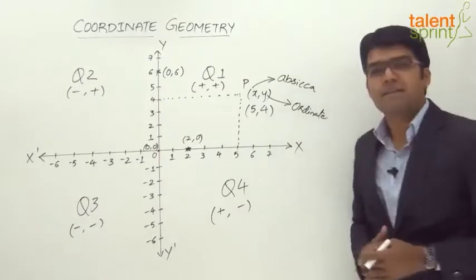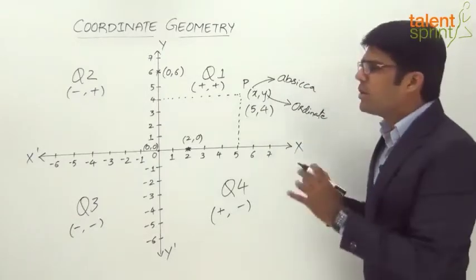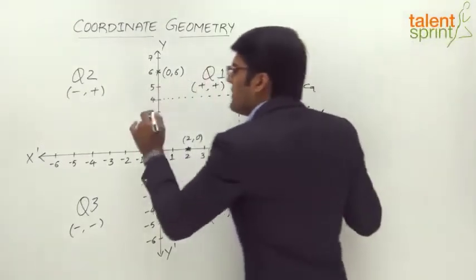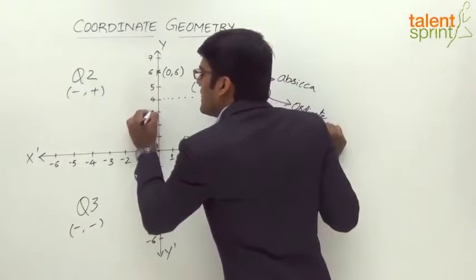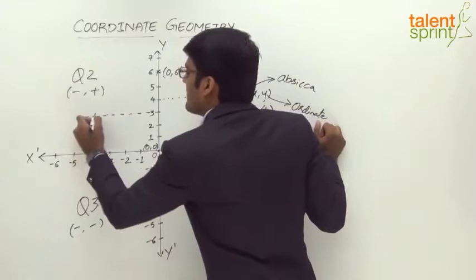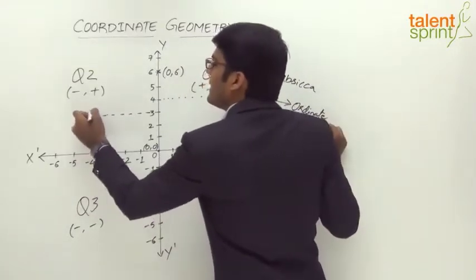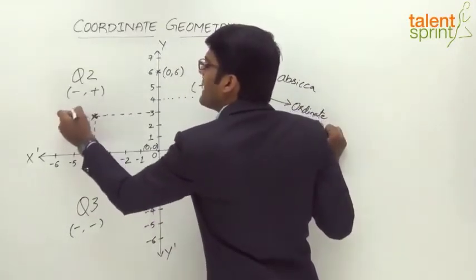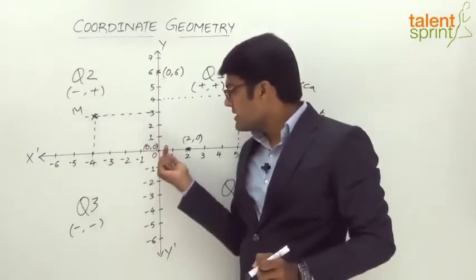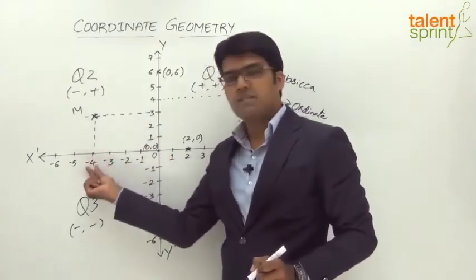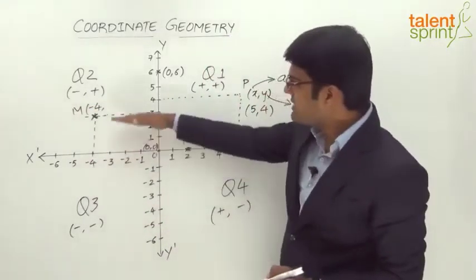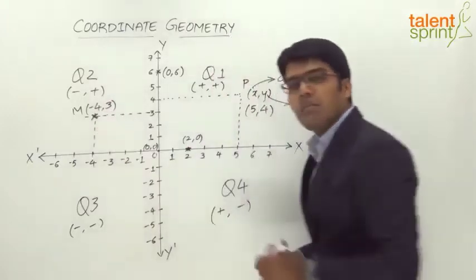Before we move on, let's look at the location of a point in each of the remaining quadrants. In quadrant 2, let's take a point M. What will be the coordinates of point M? The horizontal distance is -4, so the abscissa is -4. The vertical distance is 3, so the ordinate is 3. The point M can be described as (-4, 3).